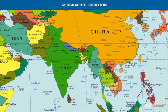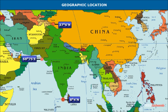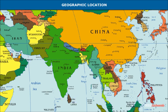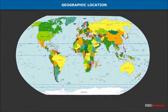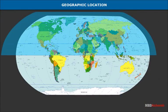The geographic location of a country is described using latitudes and longitudes. The latitudinal extent of India stretches from 8°4' North to 37°6' North. It lies between longitudes 68°75' East and 92°25' East.